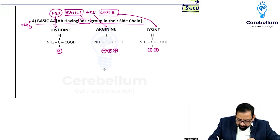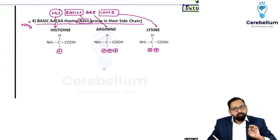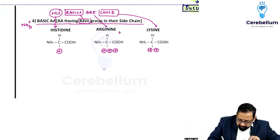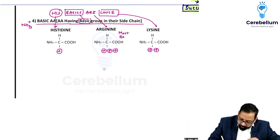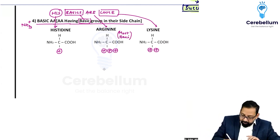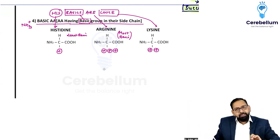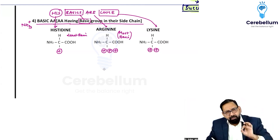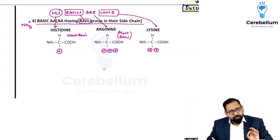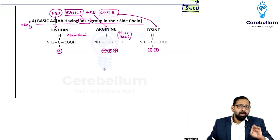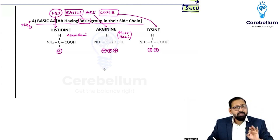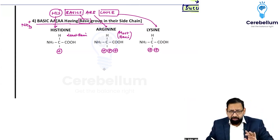Out of these three, arginine has the maximum positive charge and is the most basic. Histidine has the least positive charge and is the least basic. So if a question asks which has the maximum positive charge, the answer is arginine, and which has the least positive charge, the answer is histidine.